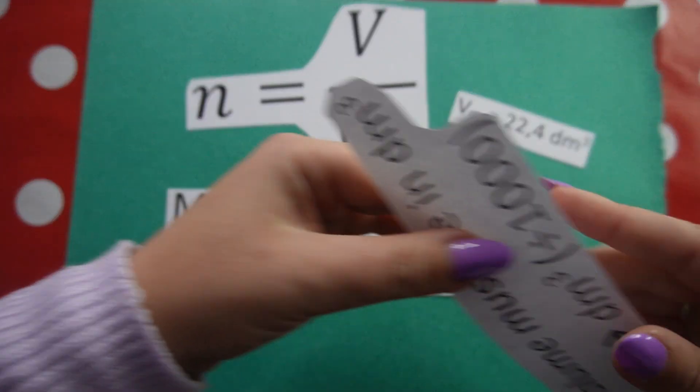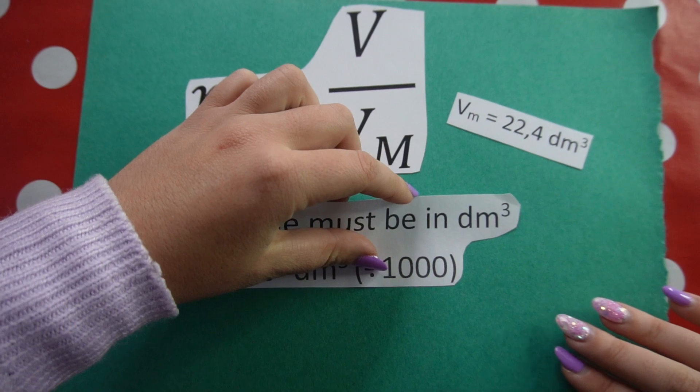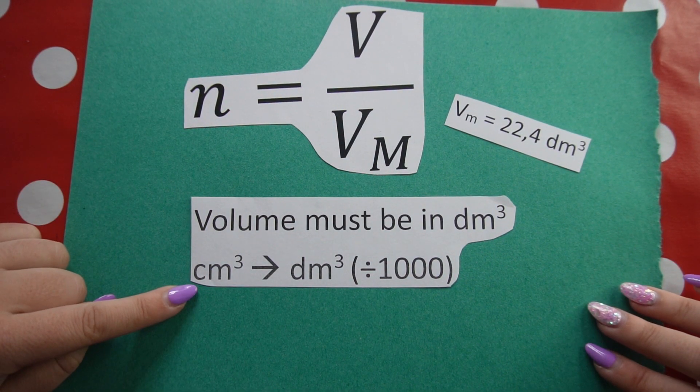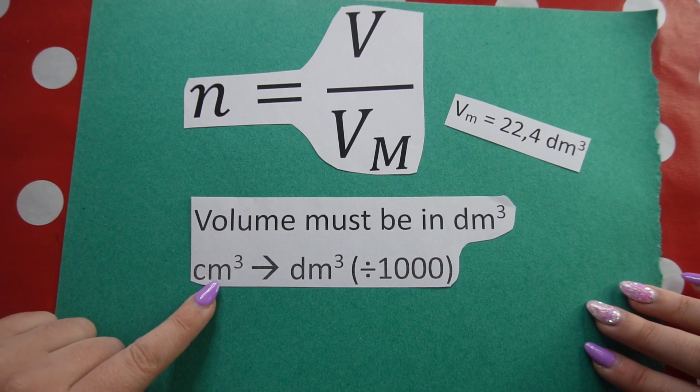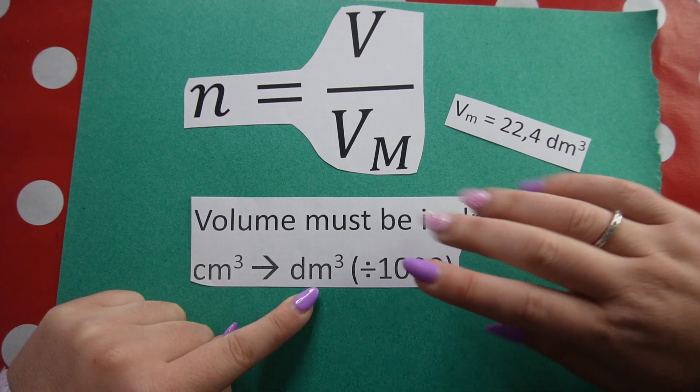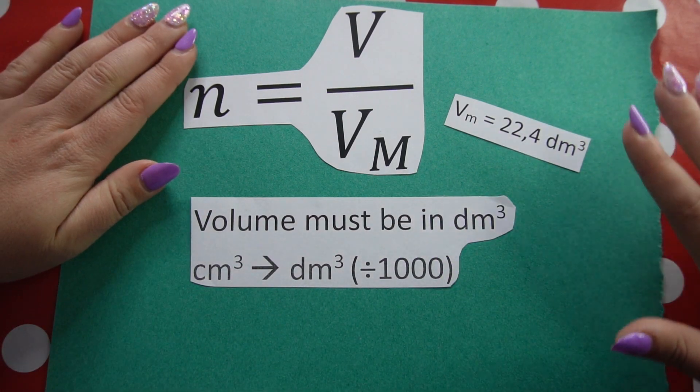Just remember, and it's very important, that volume in this formula must be in cubic decimeters. They will often give it to you in cubic centimeters. To convert from cubic centimeters to cubic decimeters, you must divide by a thousand. Let's take a look at a few examples using this formula.